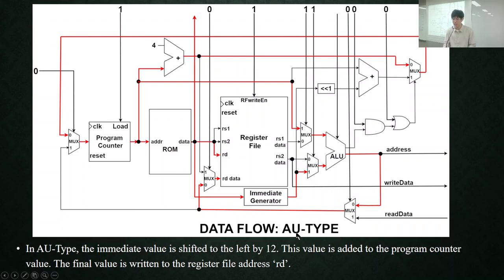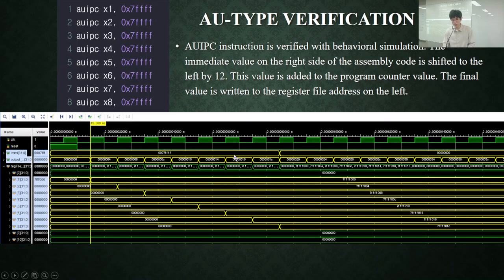This shows the data flow of AU-type. The immediate value is shifted to the left by 12, and this value is added to the program counter value. This value is written to the register file. This is the simulation result.